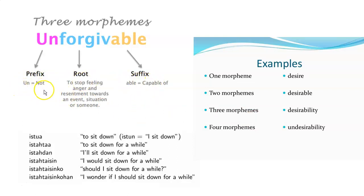The most common prefix is 'un-'. You can have the word 'happy' — it means you're in a good mood. Attach 'un-' to the beginning and we immediately know that now means someone is not happy. Simply by adding that morpheme, it changes the meaning of the word. 'Un-' is not a complete word on its own, but it still has meaning — it means 'not.' As you add more and more morphemes, it changes the meaning derived from the word.